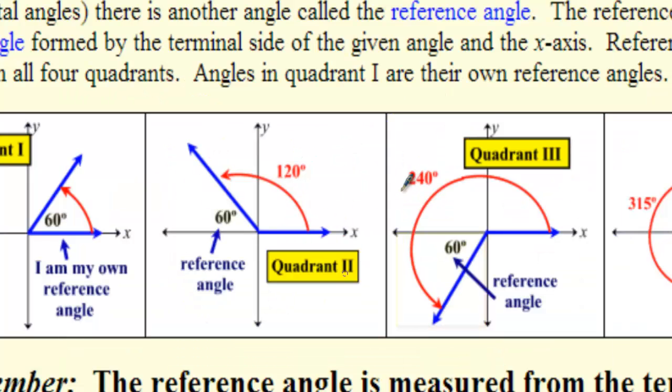So let's look, for example, at this second block. This angle, 120 degrees, is in quadrant 2. 120 degrees, by the way, in radians, is going to be 2π over 3.